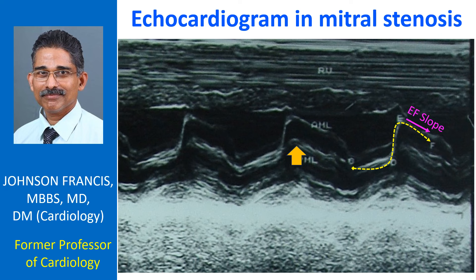The EF slope becomes almost flat in severe mitral stenosis. C and D represent the closed position of the mitral leaflets in systole, while D to E is the opening excursion of the anterior mitral leaflet.